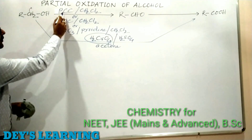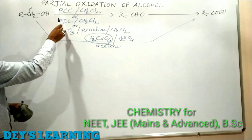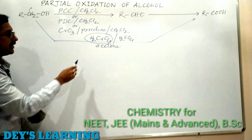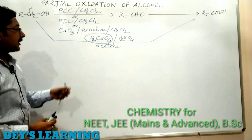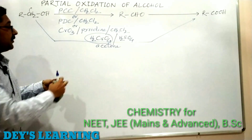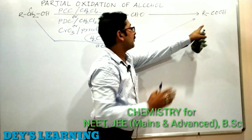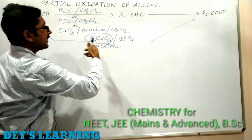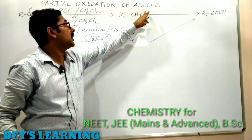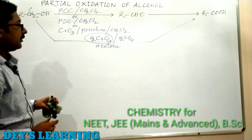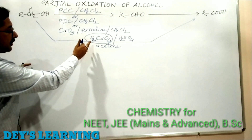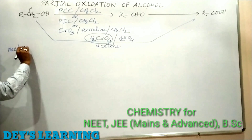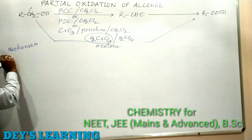Notice the similarity: PCC, PDC, CrO3, and chromic acid are all chromium compounds. But treating the alcohol with chromic acid gives complete oxidation to carboxylic acid, while treating with the other reagents stops the oxidation at the aldehyde step. Let us now consider the mechanism of chromic acid oxidation.